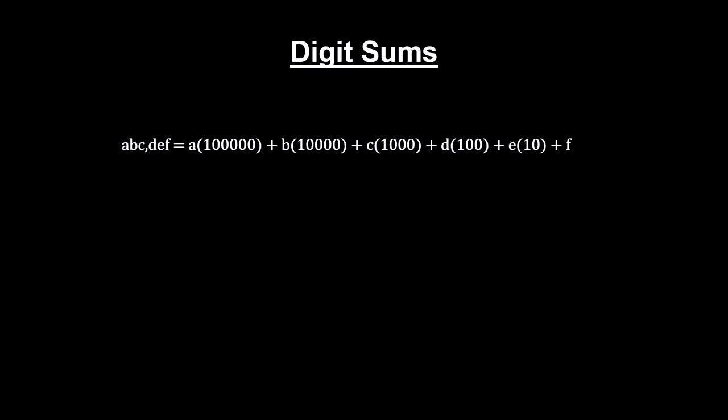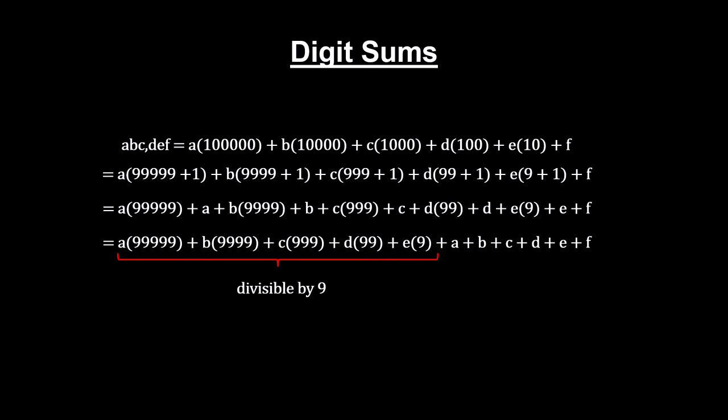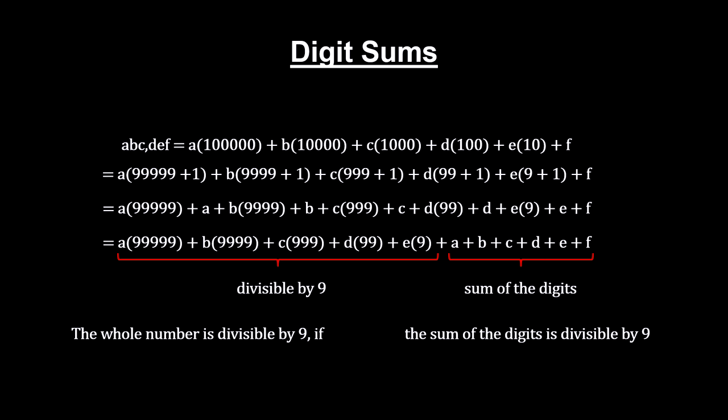Moving on a bit, we can rewrite this number by breaking up the powers of ten, subtracting and adding one to each of them. Multiplying each digit through the sum, and rearranging, we get this. Every number in the first bracket is divisible by nine. So, if the sum of the digits in the second bracket is also divisible by nine, the whole number is divisible by nine.